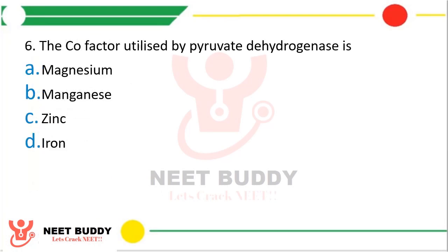Question 6: The cofactor utilized by pyruvate dehydrogenase is — option A magnesium, option B manganese, option C zinc, or option D iron. The correct answer is option A — magnesium (Mg²⁺) is used as cofactor by the pyruvate dehydrogenase enzyme.